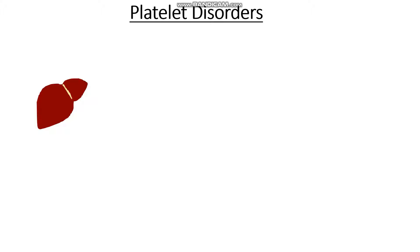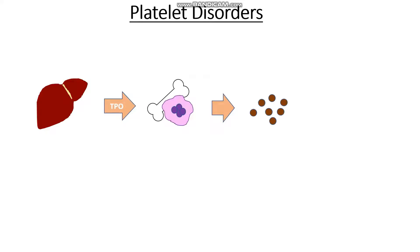It all starts at the liver with the production of a protein known as thrombopoietin. Thrombopoietin then travels to the bone marrow and causes haematopoietic stem cells to go down the myeloid route and produce lots of these purple cells known as megakaryocytes. The megakaryocytes then swell up, burst, and release platelets into circulation. These circulating platelets have a shelf life of around 10 days before they are broken down by the spleen.